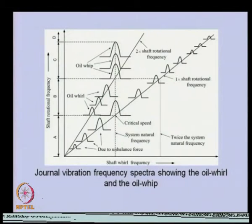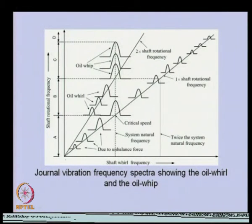We will now study two very important phenomena in the fluid film bearing due to instability: oil whirl and oil whip. They are somewhat related. In a Campbell diagram, the horizontal axis is the shaft whirl frequency and the vertical axis is the shaft spin speed or rotational speed. At low speed, in zone A, this is the 1x line, meaning the frequency of whirl and speed are the same — this is the synchronous whirl condition at 1x of the rotational frequency.